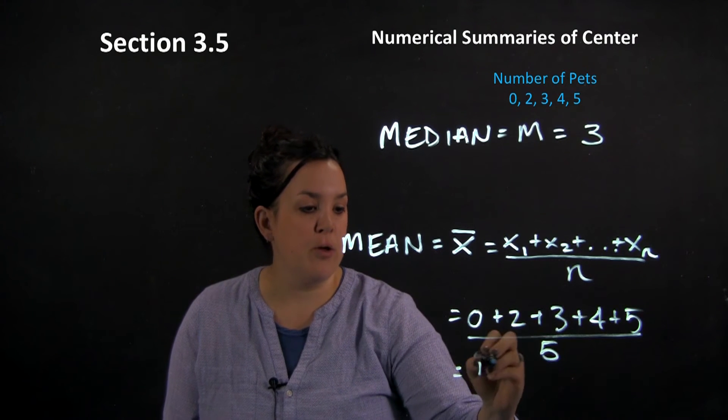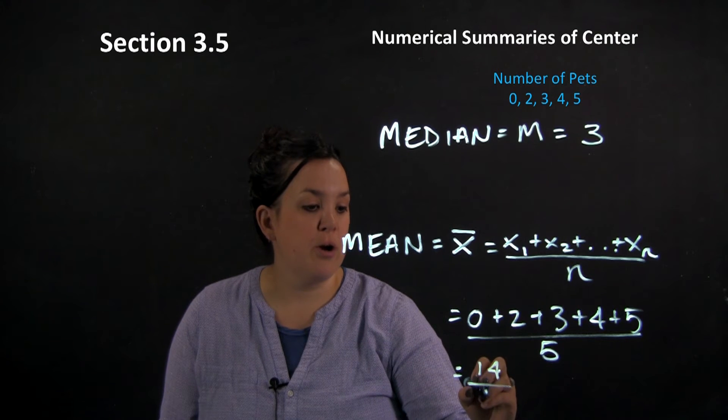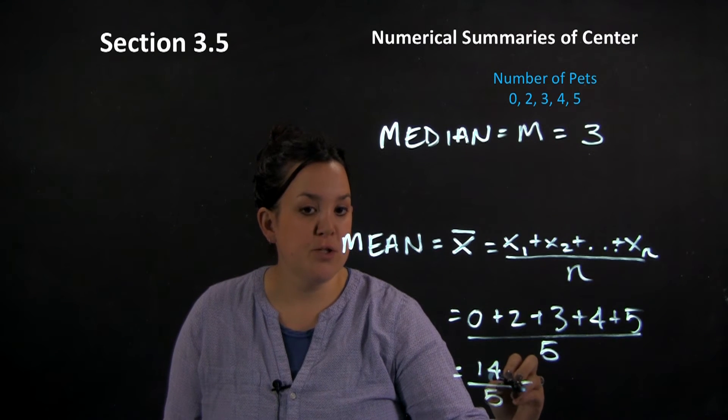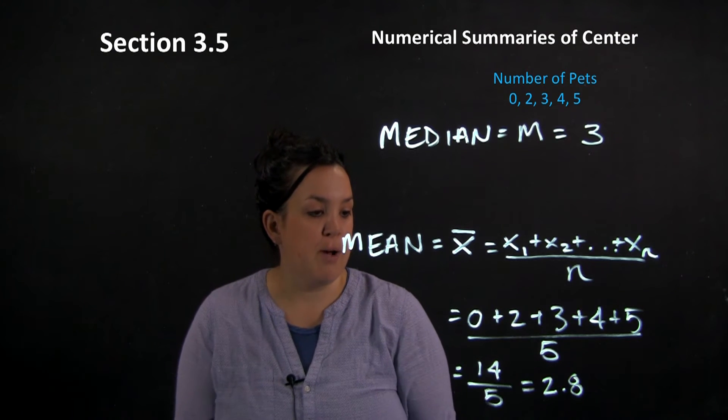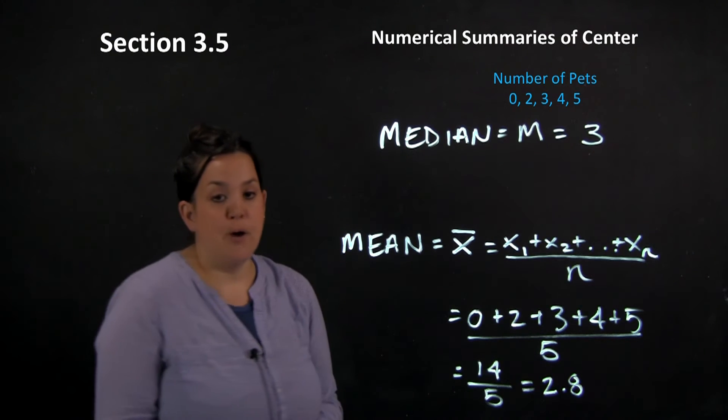So summing all of those values, so we have a numerator of 14. So our mean then is going to be 2.8. So 14 divided by 5 gives us a mean of 2.8.